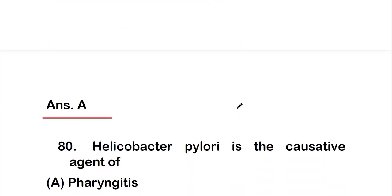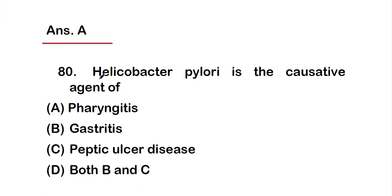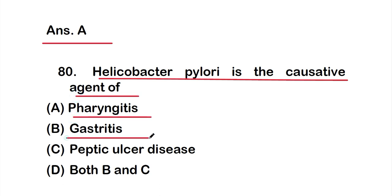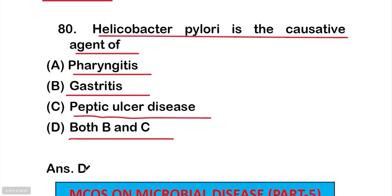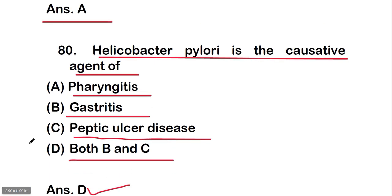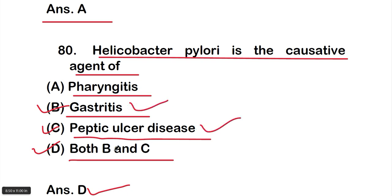Question number 80: Helicobacter pylori is the causative agent of — option A: pharyngitis, option B: gastritis, option C: peptic ulcer disease, or option D: both B and C. The correct answer is option D, both B and C — Helicobacter pylori is the causative agent of both gastritis and peptic ulcer disease. These are all 20 questions for Part 4 of disease microbiology. Thank you for watching.